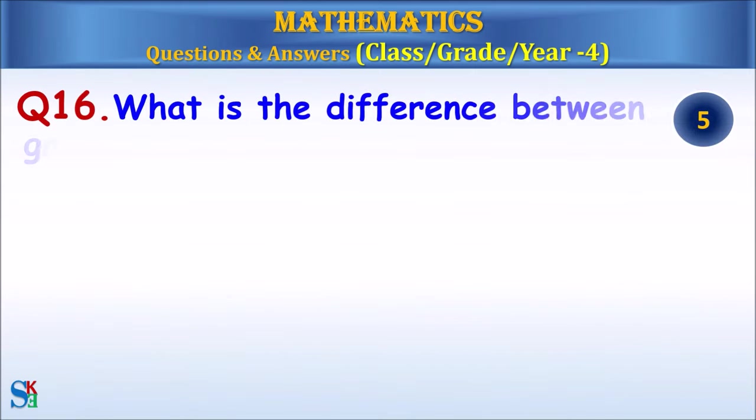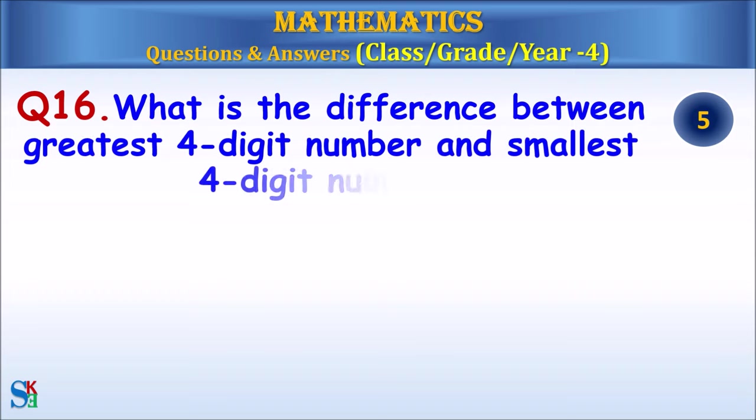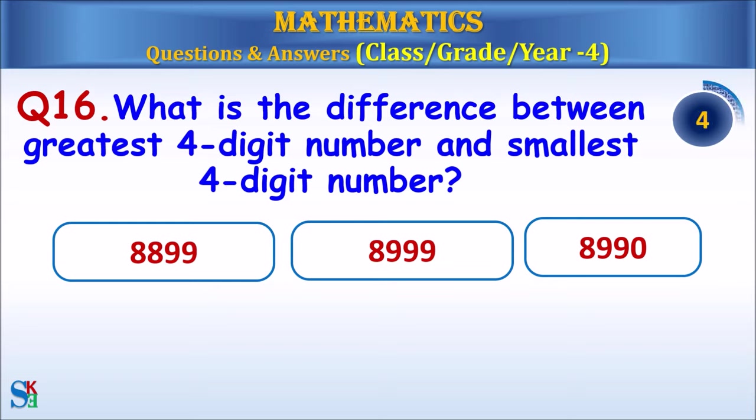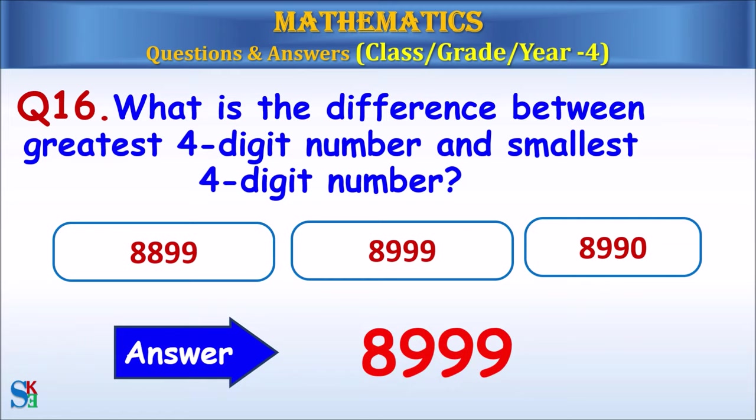Question 16: What is the difference between the greatest 4-digit number and the smallest 4-digit number? The answer is 8,999.